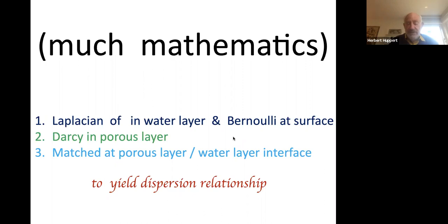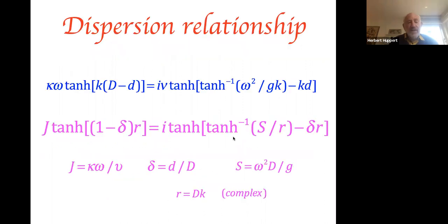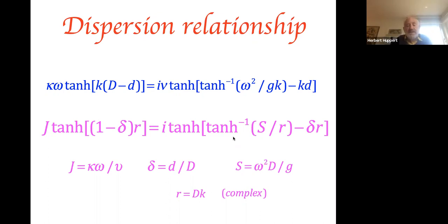This analysis leads to a new dispersion relationship — shown in blue — relating the frequency to the wave number, where (D minus little d) comes into the porous medium part. Crucially, there is an imaginary number i on the right-hand side, which tells us that the wave number k is going to have a real part and an imaginary part — meaning the waves will decay as they travel.